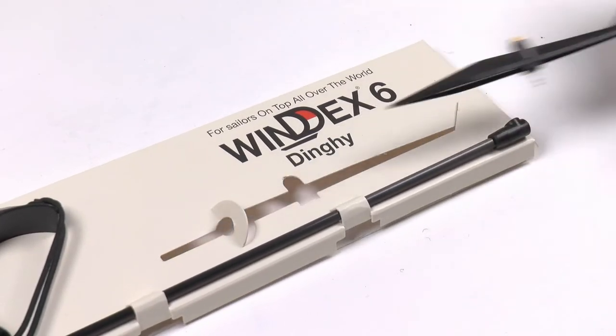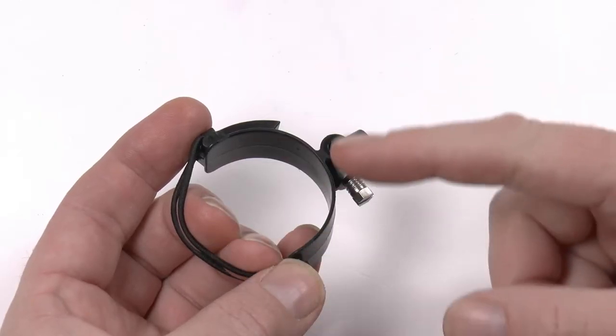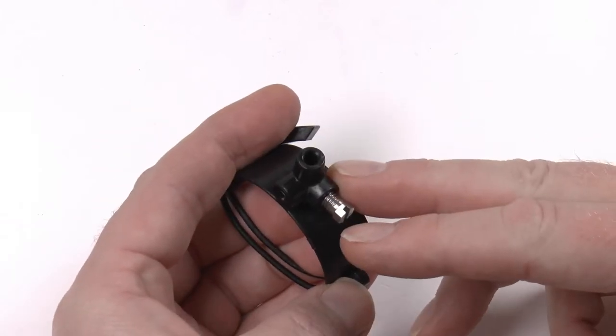The vane with its sapphire bearings, the shaft and the mast fitting. Windex 6 has a flexible mount, especially designed for dinghies, multi-hulls and other fast sailing crafts.